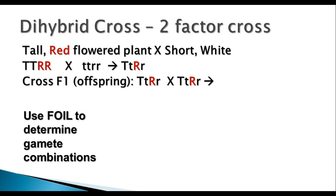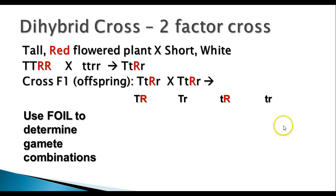Now if we cross the F1 generation — the offspring of that — we have two heterozygous individuals that are heterozygous for two different traits. We're going to use the FOIL method to determine the gamete combinations. FOIL stands for first, outside, inside, last. This is the same method that you use to multiply binomials in algebra.